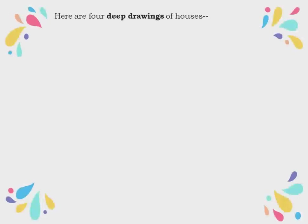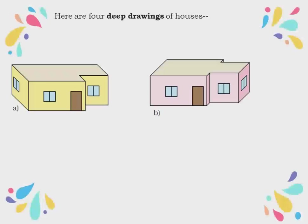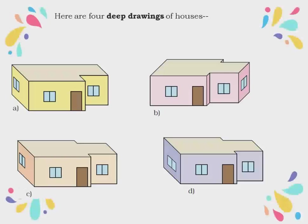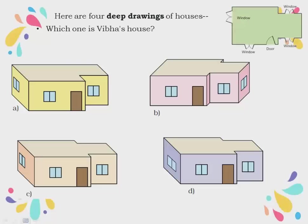Here are four deep drawings of the house. In these you can find length, depth, height and everything. For a window you can tell the length and dimensions. Now which one is Vibha's house? To know, we go back to the floor map, because it shows us where the door and windows are. By seeing the floor map, D is identified as Vibha's house.